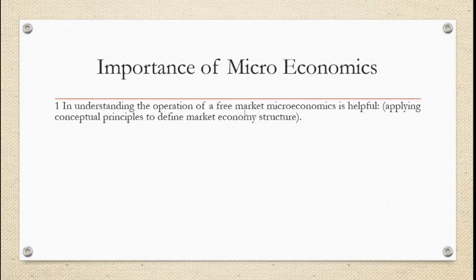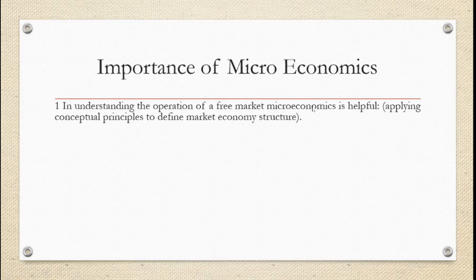A free market economy is a system where supply and demand forces operate, and the government has no intervention, or minimum intervention. So when we talk about the free market economy, it means that the price of products or services is determined by demand and supply. Microeconomics will explain that the price of any product will be increased or decreased due to the reason of supply and demand.